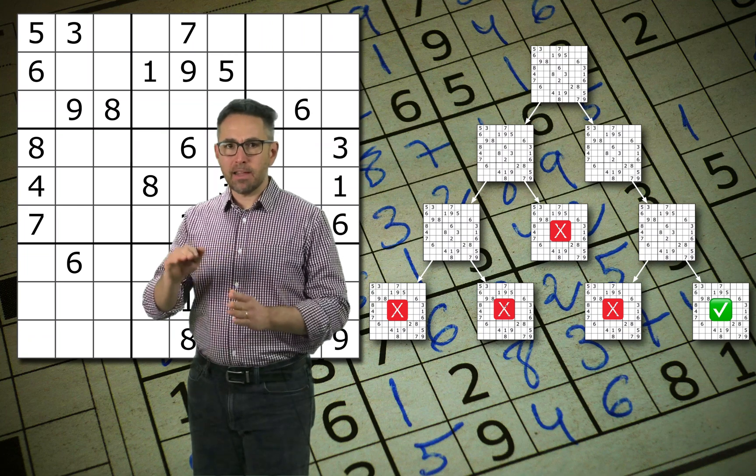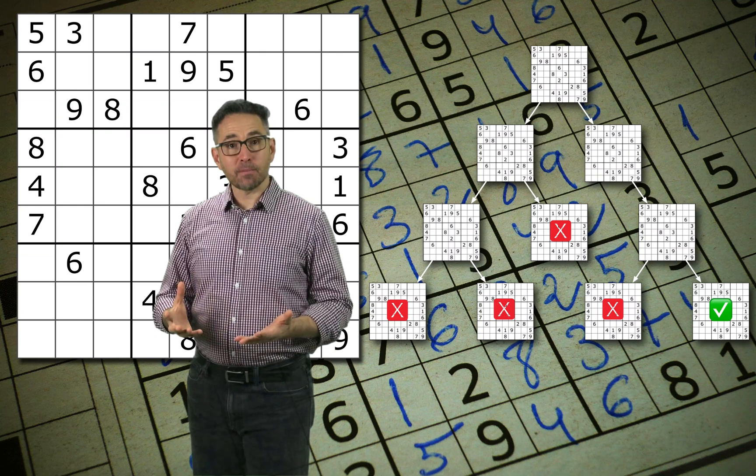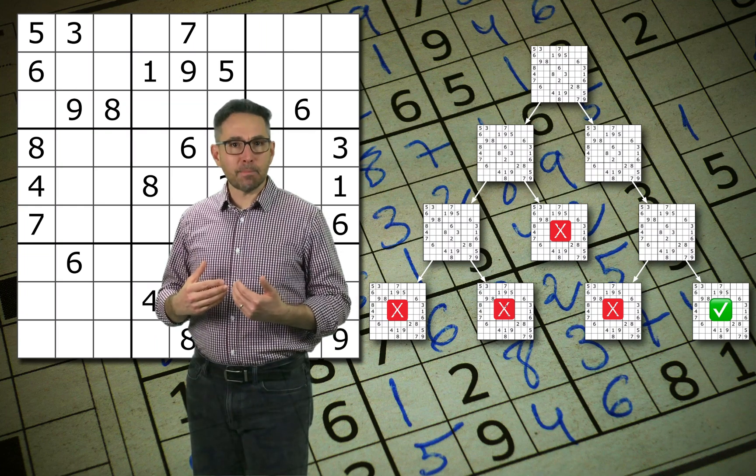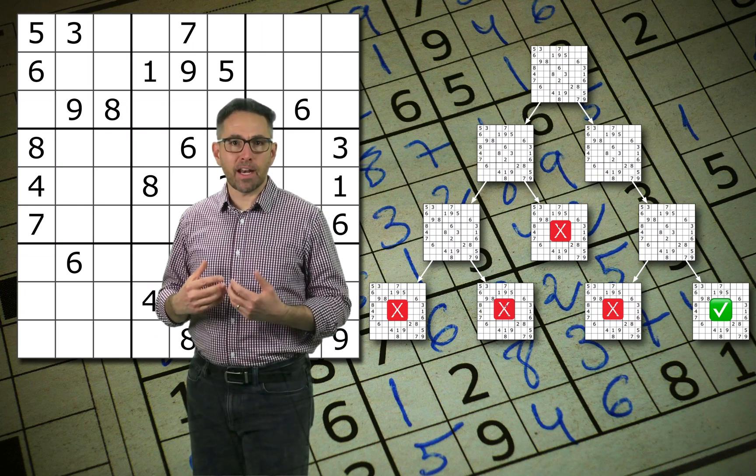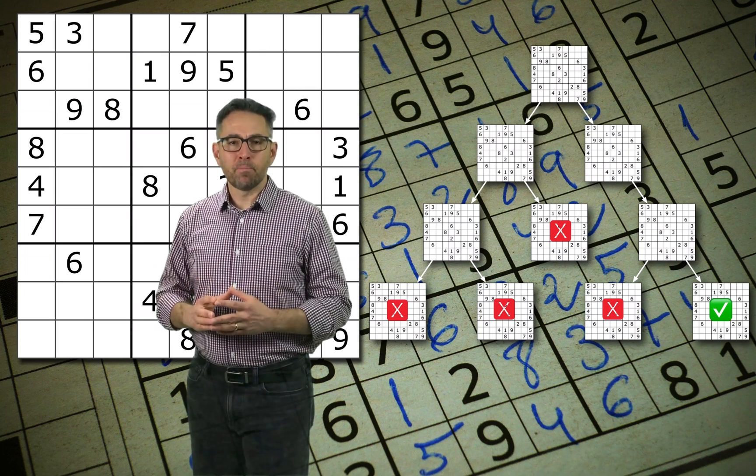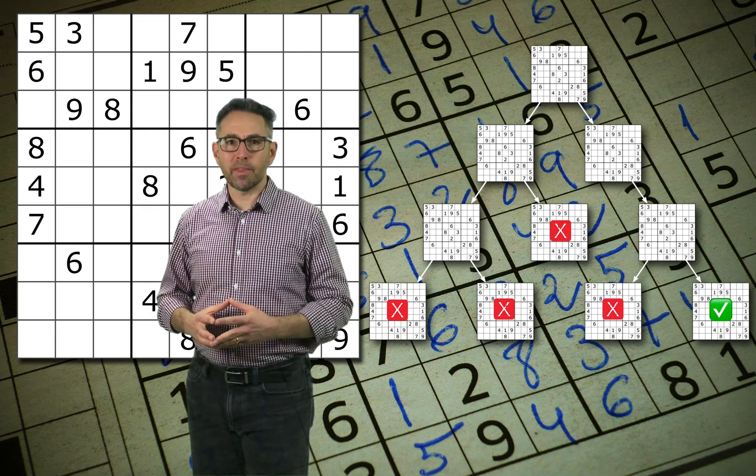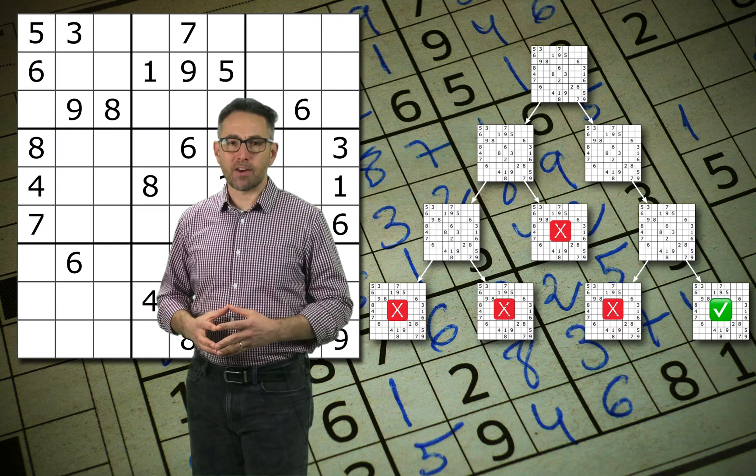If one of those three constraints has been violated, it backtracks and takes back the last filled in cell that it potentially tried to fill in and fills it in with a different number. It continues this strategy until it's able to fill in all the empty cells with a number that satisfies the Sudoku constraints.